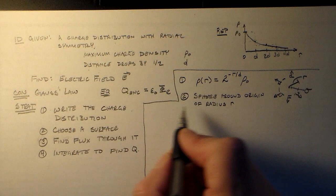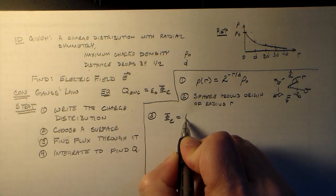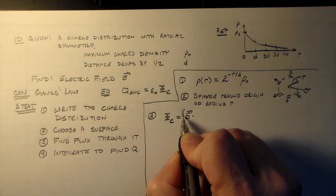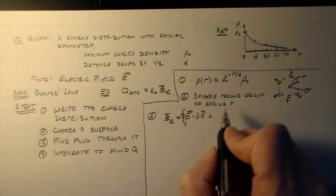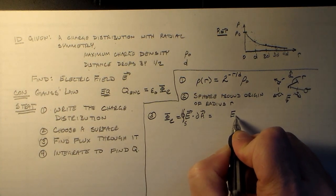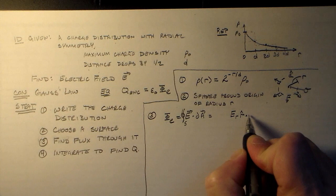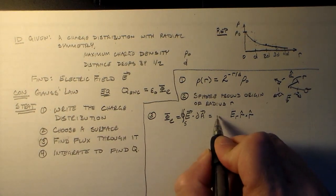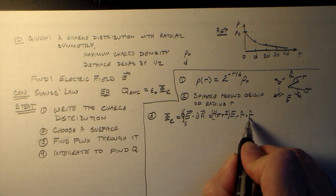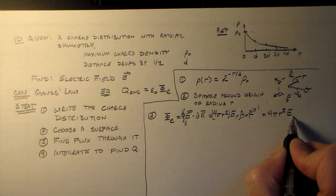Third, what's the flux through this surface? We need the surface integral of E·dA. Since E points in the r-hat direction and the normal is also in the r-hat direction, and the area of this sphere is 4πr², this simplifies to just 4πr²·E_r. Nice and simple.